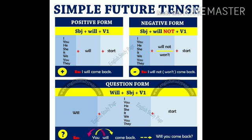And the last is the question form. In the question form, 'will' comes first before the subject. The structure is: Will + Subject + V1. For example, the positive sentence is 'You will come back,' so the interrogative sentence becomes 'Will you come back?' This is how we have the formula for positive, negative, and question forms. You can take a screenshot if you like.